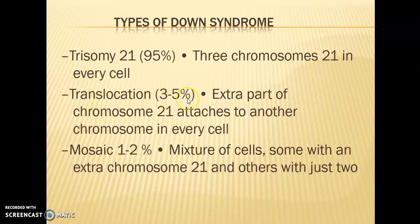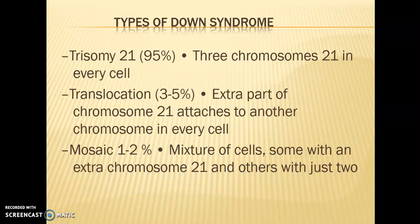Translocation Down syndrome accounts for three to five percent of cases, where an extra part of chromosome 21 attaches to another chromosome in every cell. Mosaic Down syndrome is the rarest, accounting for only one to two percent of cases. The term 'mosaic' refers to a mixture — here it is a mixture of normal and abnormal cells, some with an extra chromosome 21 and others with just two.